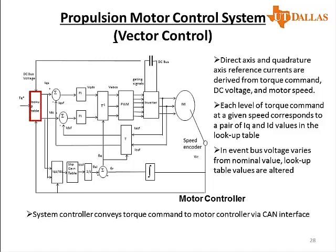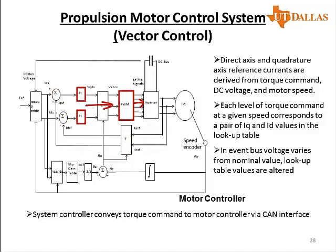In the event the bus voltage varies from nominal value, the lookup table values also change. The reference values are compared with the actual D and Q currents obtained from measured currents and then from ABC to DQ transformation. The output of the PI controllers will set the right PWM signals to control the inverter and motor to achieve the desired response. The position information of the motor is derived from the speed encoder.